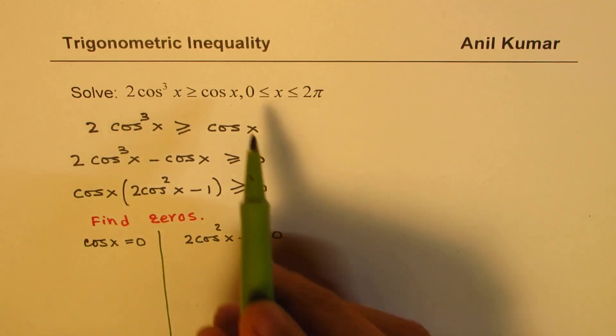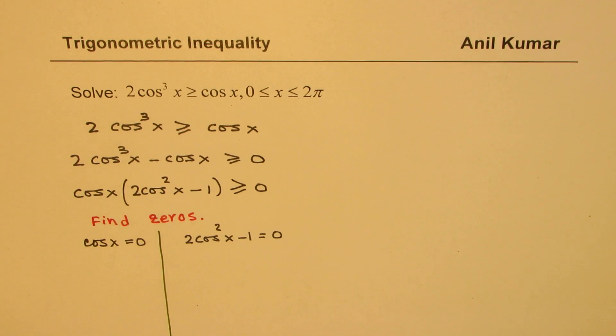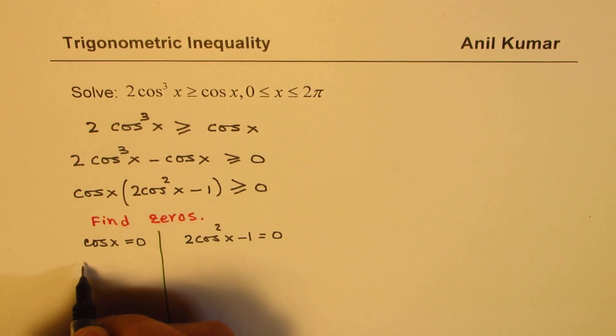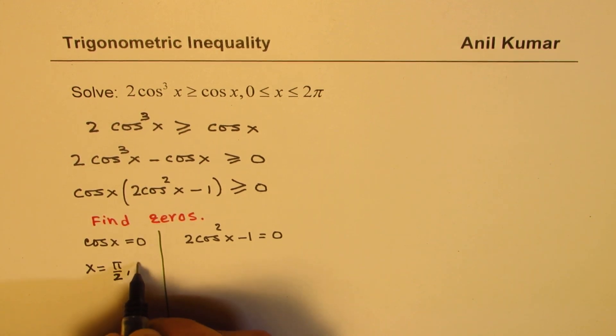We are working in the interval 0 to 2π. So in 0 to 2π, cos x is 0 for x equals 2 values, π/2 or 3π/2.